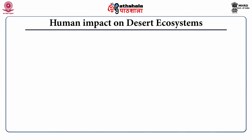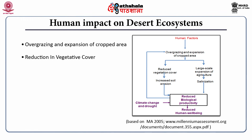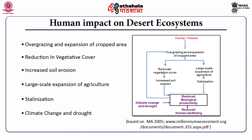Human impacts on desert ecosystems: humans have badly affected desert ecosystems. Main anthropogenic factors include overgrazing and expansion of cropped area, reduction in vegetative cover, increased soil erosion, large-scale expansion of agriculture, salinization, climate change and drought.